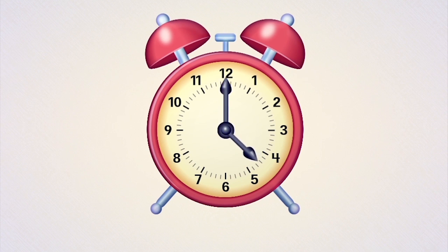It takes the hour hand one hour to move from one number to the next. The minute hand moves more quickly and goes around the whole clock face in one hour, or 60 minutes. It takes the minute hand only five minutes to move from one number to the next.